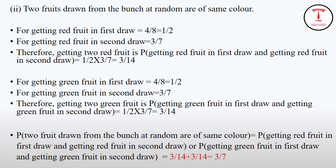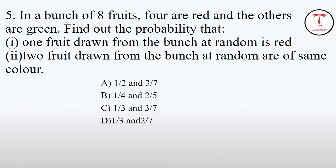So according to the addition rule, if OR comes, we should add both events. This is either probability of getting red fruit in first draw AND probability of getting red fruit in second draw, OR probability of getting green fruit in first draw AND probability of getting green fruit in second draw. So here OR came, so we should add both the events as 3/14 plus 3/14, which equals 3/7. And the answer is 1/2 and 3/7.